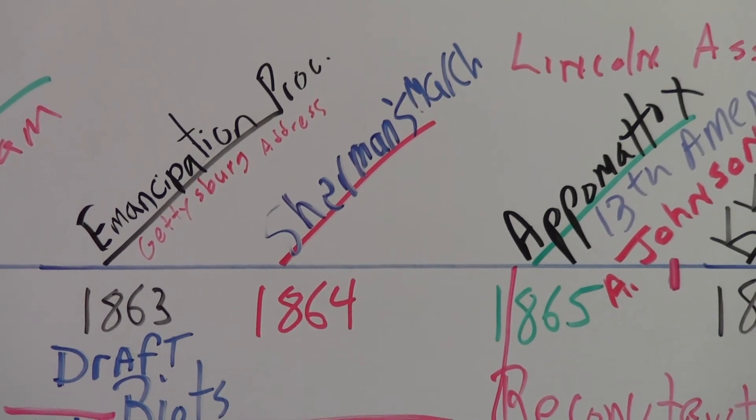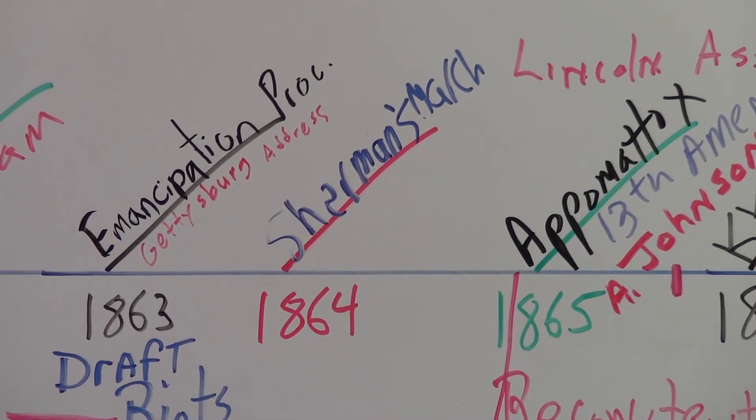In 1864, William Tecumseh Sherman is going to put an exclamation point on the victories at Gettysburg and Vicksburg with Sherman's march. This is the famed march where after he burns Atlanta, he marches from Atlanta to Savannah, destroying everything in his path, creating what's called a bloody swath. The South will never forgive him for this, and it'll be a problem after the war with all the Southern resentment towards the North.